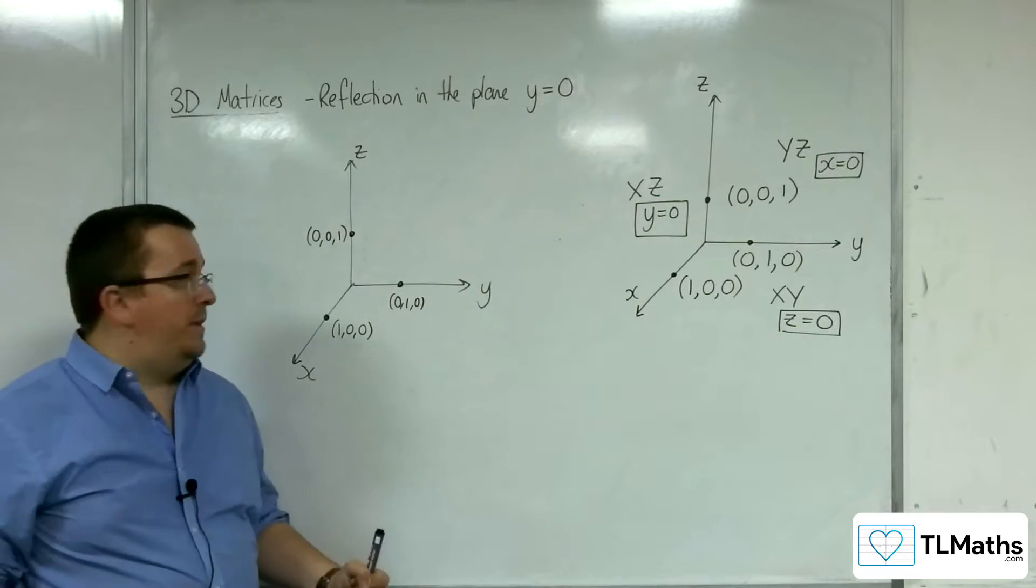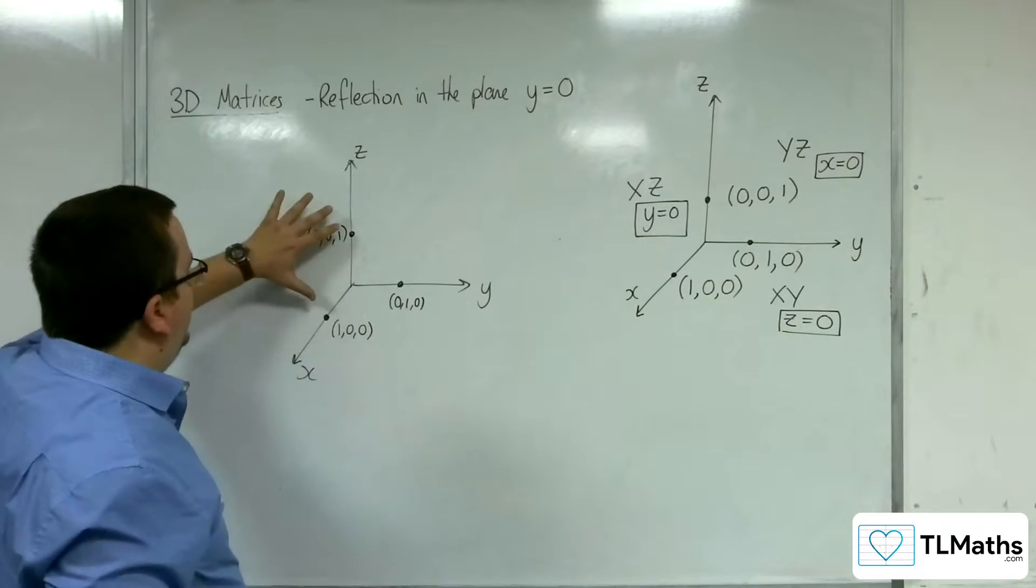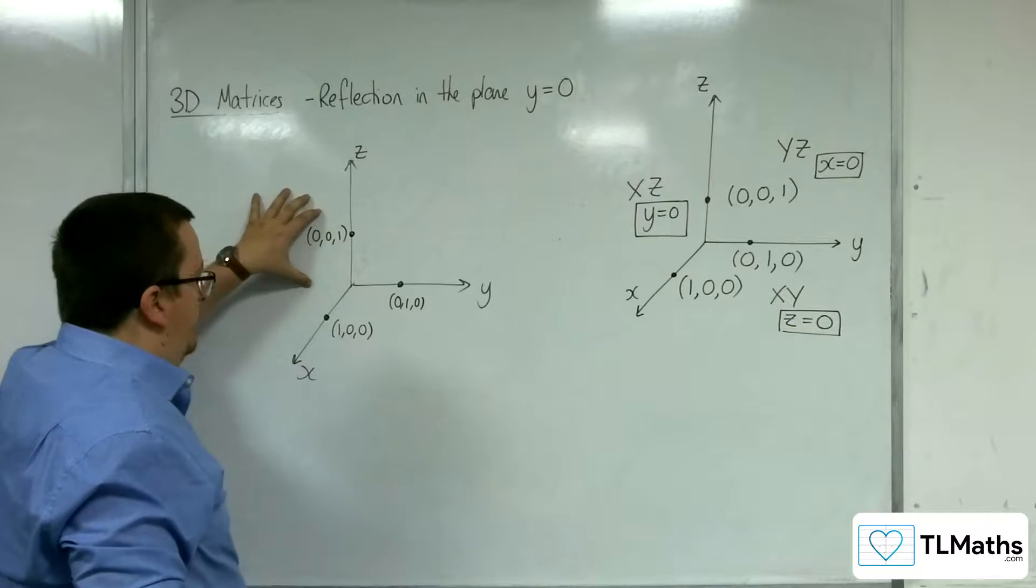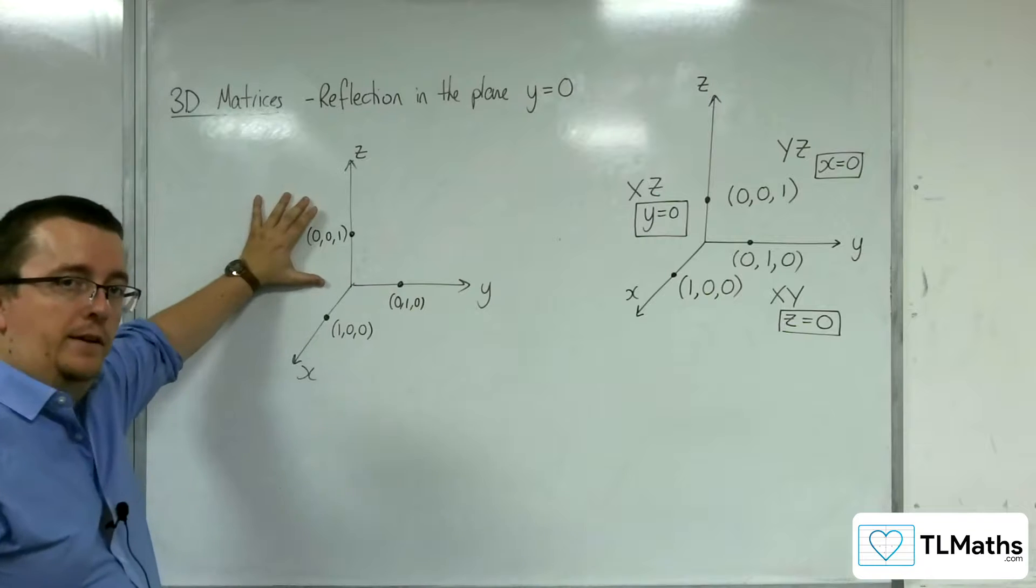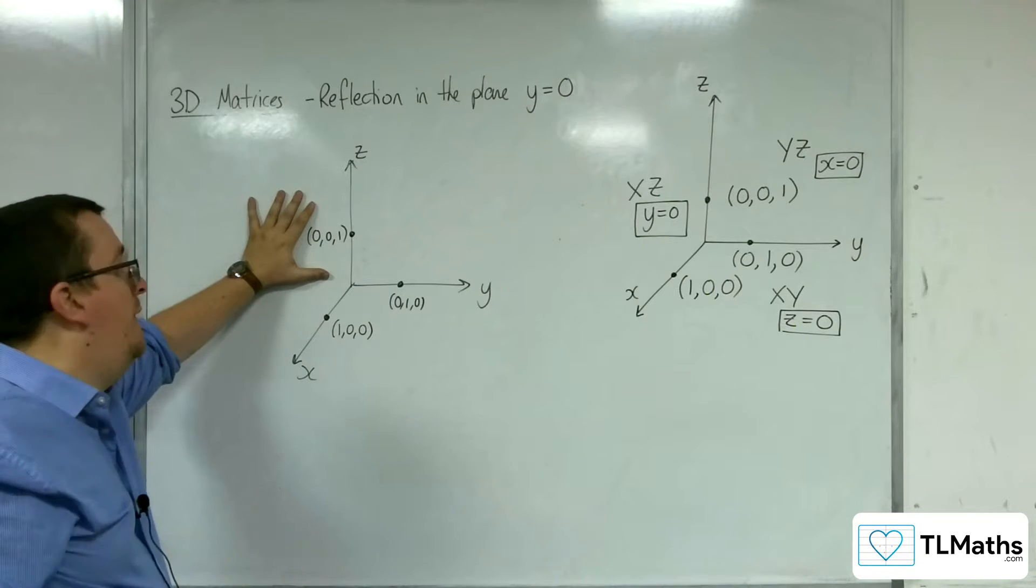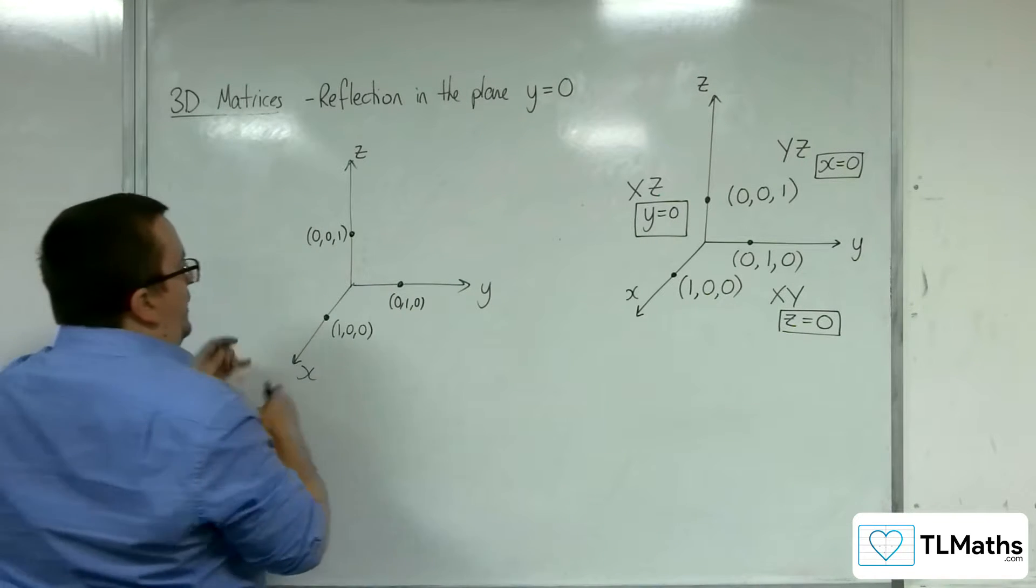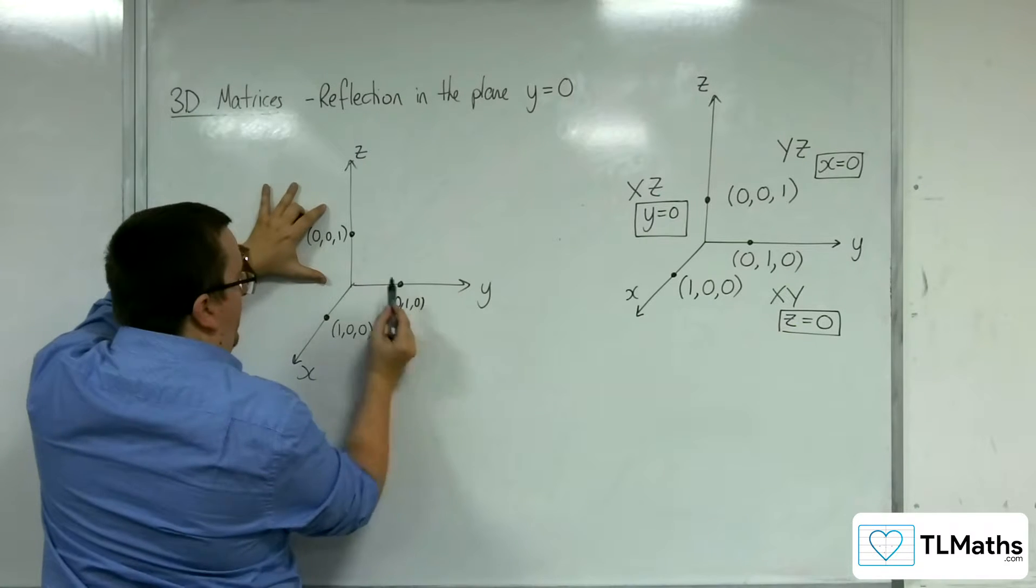So just like we did before, if we're reflecting in this wall here, then the points that are on that plane remain fixed, remain where they are.